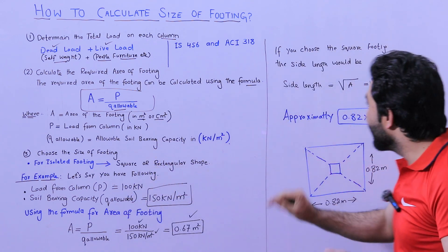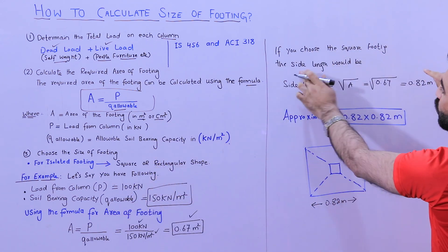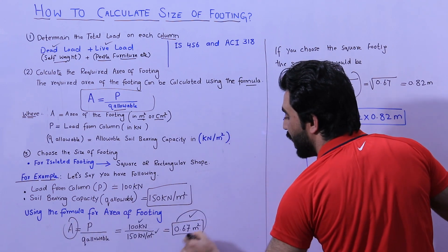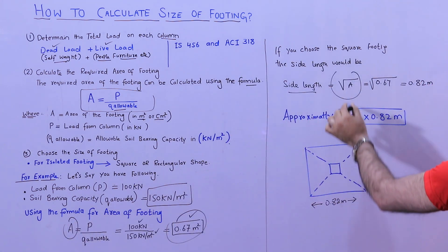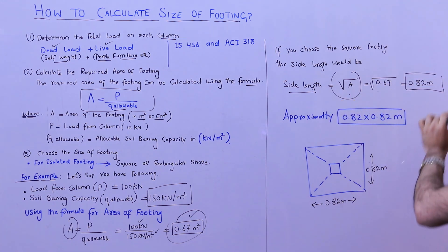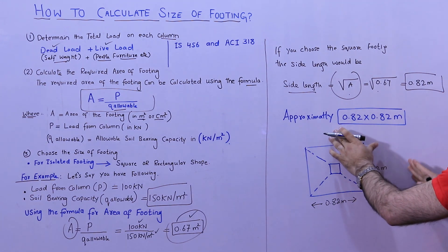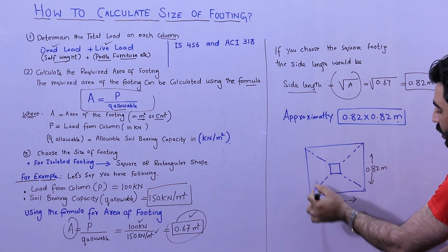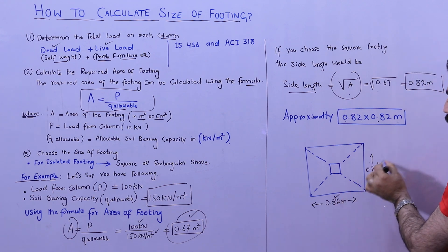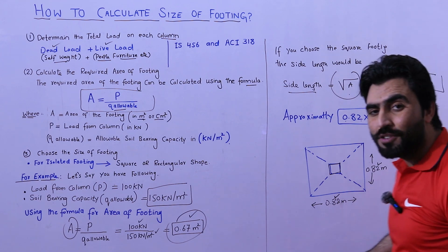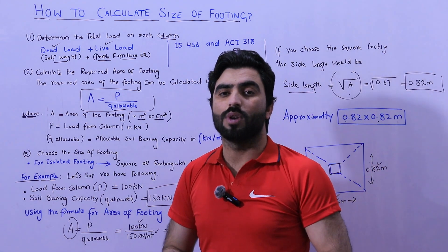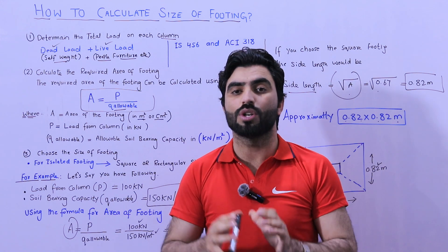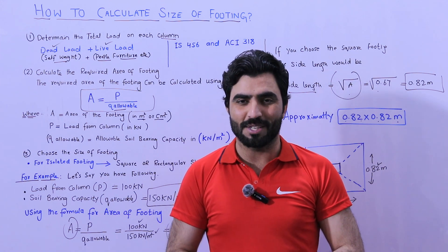If you choose a square footing, the side length is the square root of A. Since A = 0.67 m², taking the square root gives approximately 0.82 meters. Therefore, the size of the footing is 0.82 m × 0.82 m. This is a short but very important video for you to know how to calculate the size of footing, especially when you have the bearing capacity of the soil and the load on the column. Thanks for watching — see you in the next video, goodbye.